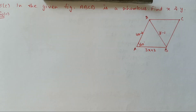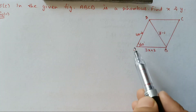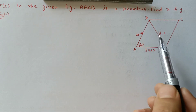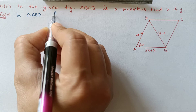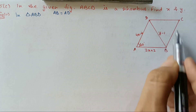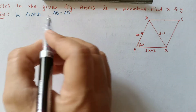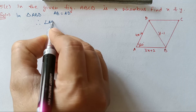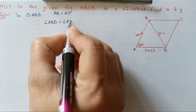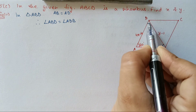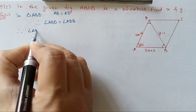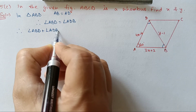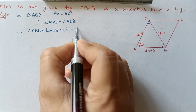Next, question number 5C. In the given figure ABCD is a rhombus — find the value of X and Y. We focus on triangle ABD. Since ABCD is a rhombus, all four sides are equal, so AB equals AD. Therefore angle ABD equals angle ADB. Using angle sum property: angle ABD plus angle ADB plus 60 degrees equals 180 degrees.